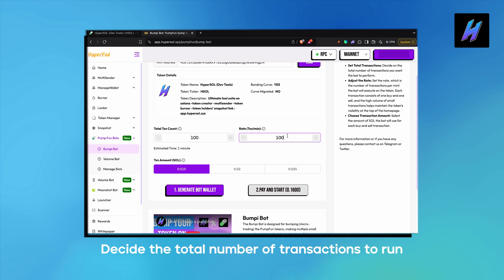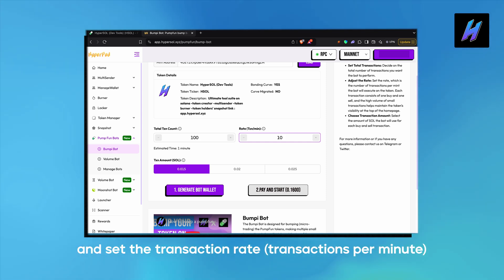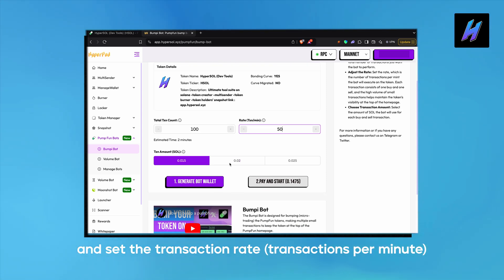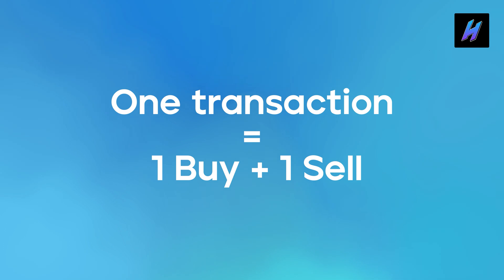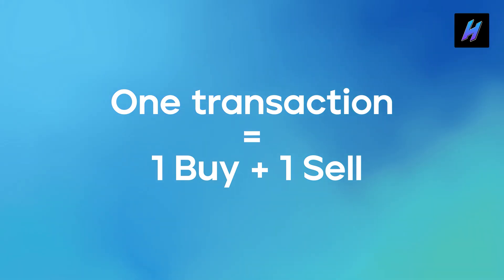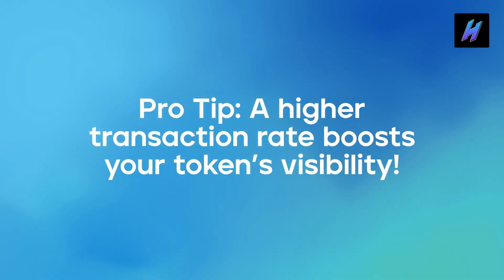Decide the total number of transactions to run and set up the transaction rate. One transaction equals one buy plus one sell. Pro tip: a higher transaction rate boosts your token's visibility.